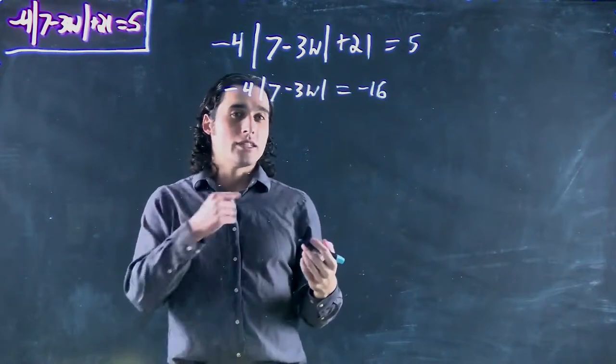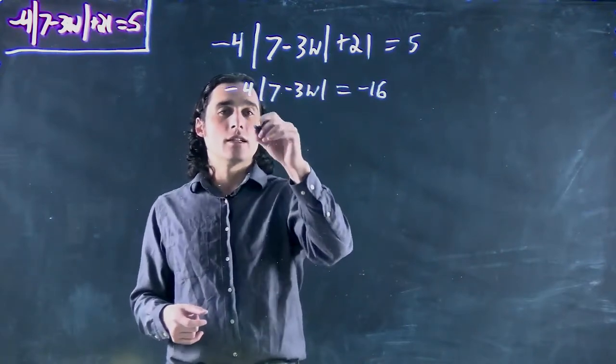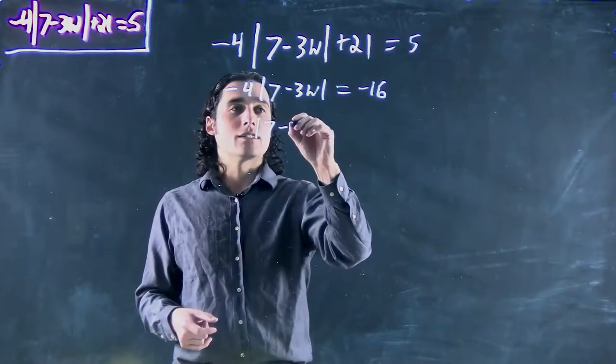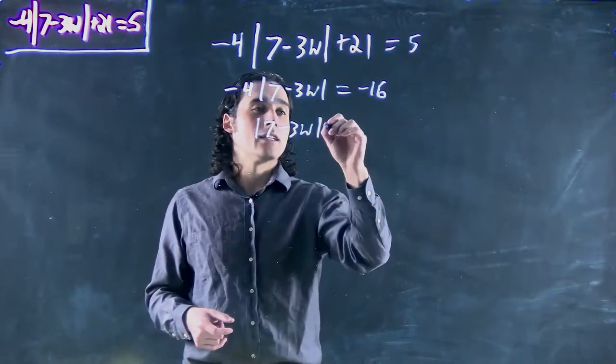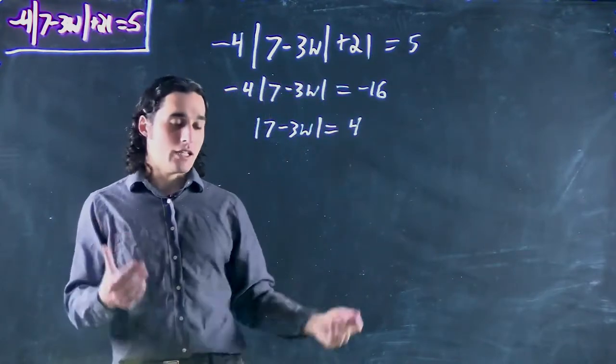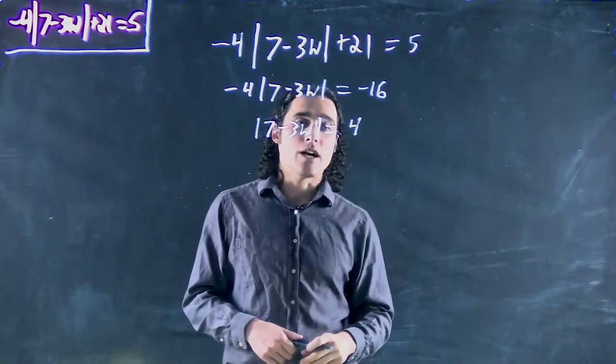Now we still need to get it on its own so we divide both sides by -4. And so we'll have absolute value of 7 - 3w equals 4. There's a positive on that side. We can continue. We can get rid of our absolute value.